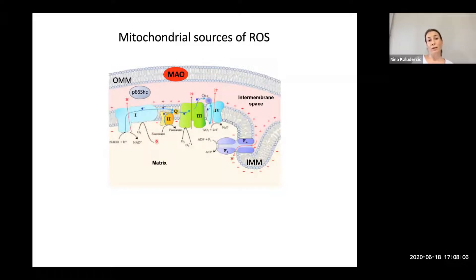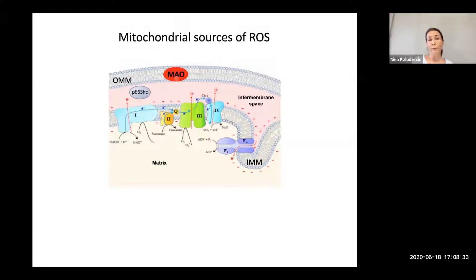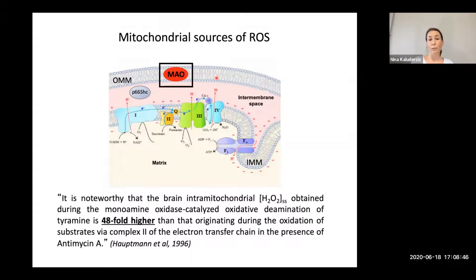There are also other sites within the mitochondria where ROS are being formed. For instance, P66-SHC is a cytosolic adapter protein that upon stress can translocate to mitochondria. It can steal electrons from cytochrome C, resulting in the formation of H2O2. Then we have monoamine oxidases — flavoenzymes localized at the outer mitochondrial membrane, responsible for the catabolism of biogenic amines. We became interested in monoamine oxidases because the steady-state H2O2 formation during MAO-catalyzed oxidative deamination of tyramine is 48 times higher than that generated by complex two of the respiratory chain with antimycin A — the condition of maximal respiratory chain ROS production.